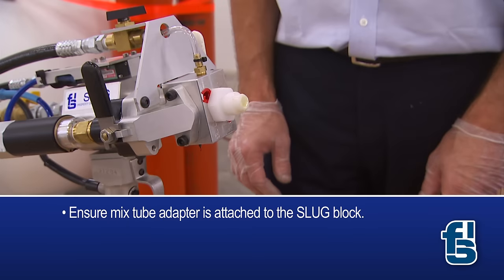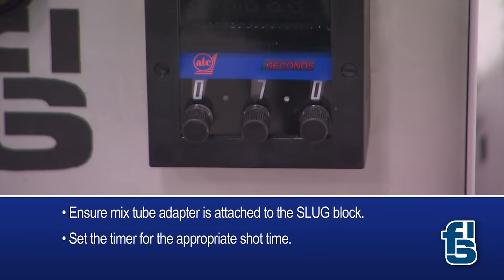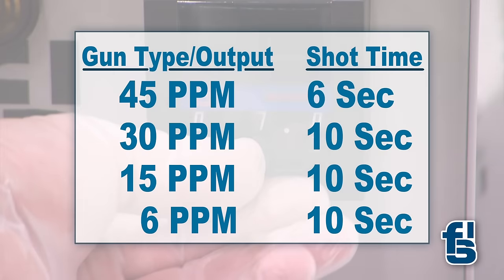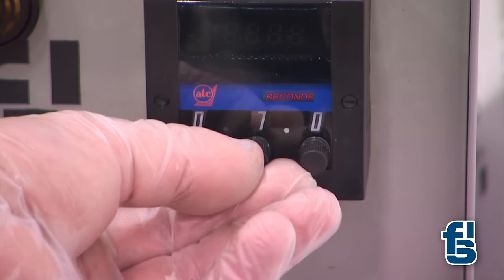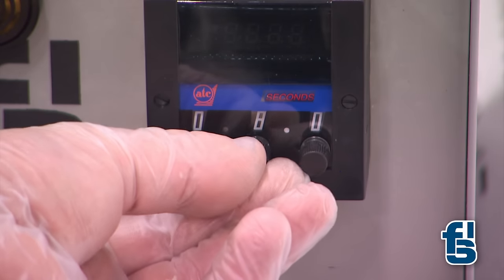Let's review the ratio procedures. Start by making sure the mixed tube adapter is attached to the slug block. Now, set the timer for the appropriate shot time based on the gun output, which is measured in pounds per minute or PPM. In this case, we are using a 30 PPM gun, so we set the timer for 10 seconds.